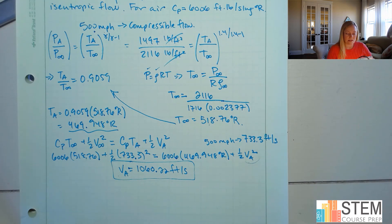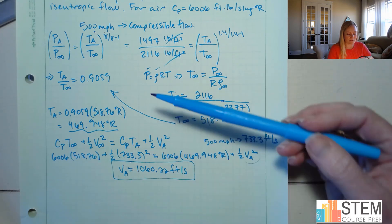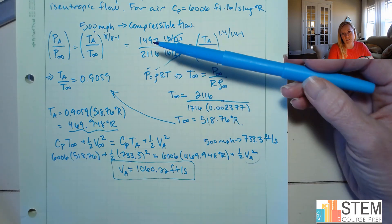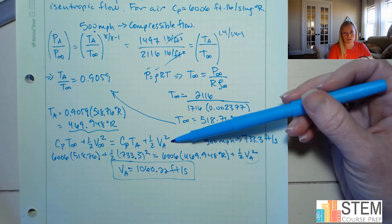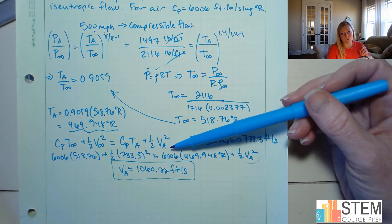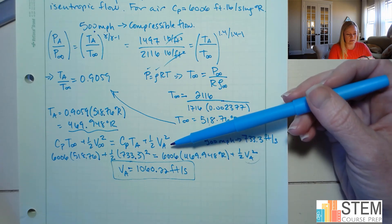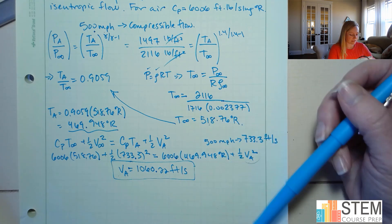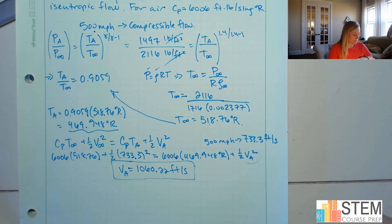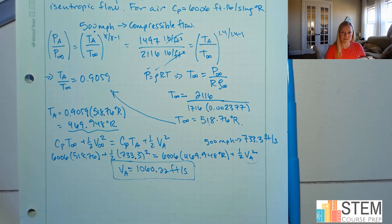That's how you go about using the energy equation. Unless you're given the temperatures directly, you'll have to use these other equations to find temperature. Make sure temperatures are in absolute temperature scales — Rankine or Kelvin, not Celsius or Fahrenheit. All right, that's the end of that example.